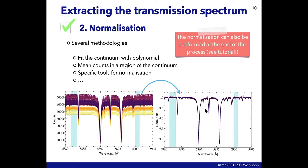The normalization step can be applied at the beginning or at another moment in the process. One approach is to find the continuum level and divide each individual spectrum by it, going from non-normalized to normalized observations. Here we are looking at the stellar spectrum around the sodium doublet — the first and second lines of the doublet.